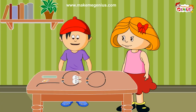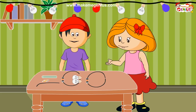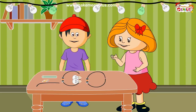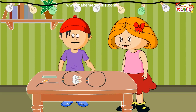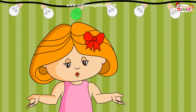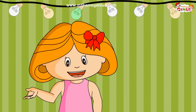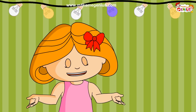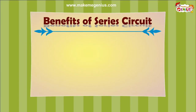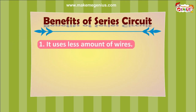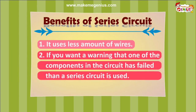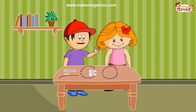Is there no use for this kind of circuit? We use this type of circuit in Christmas or Diwali lights — one small bulb after another. But if one of the bulbs goes off, all lights will go off. There is another disadvantage: if you keep increasing the number of bulbs, the light of each bulb will get dimmer. However, there are two benefits. One, it uses less wire. And second, if you want a warning that one component has failed, the series circuit is used. Now I understand all about this simple circuit.